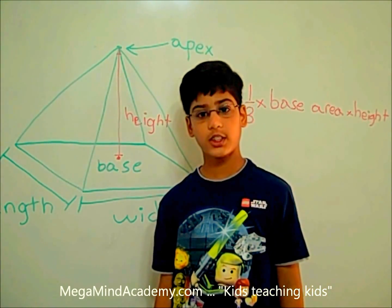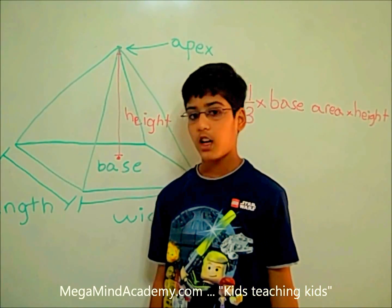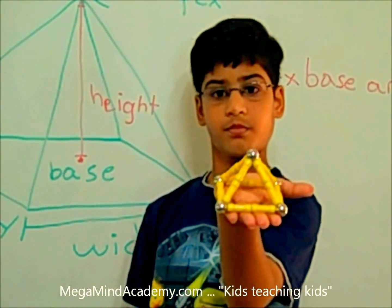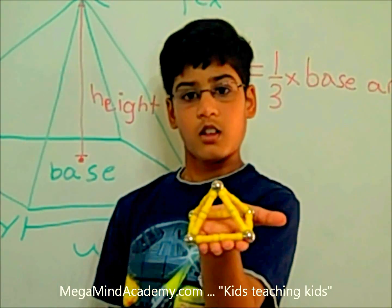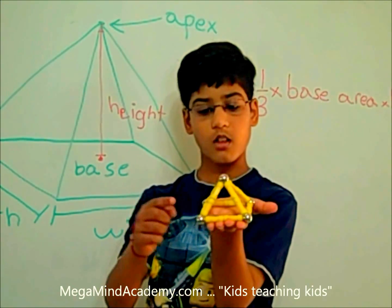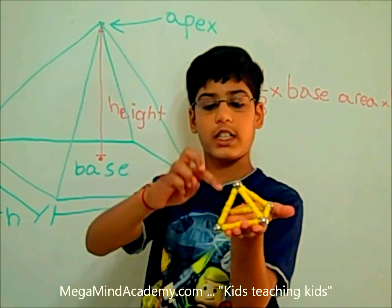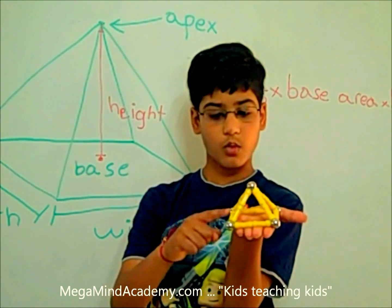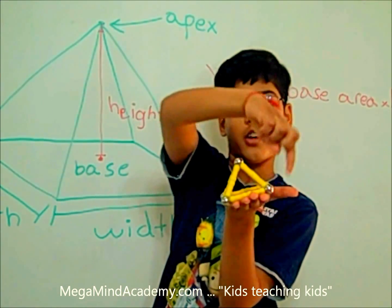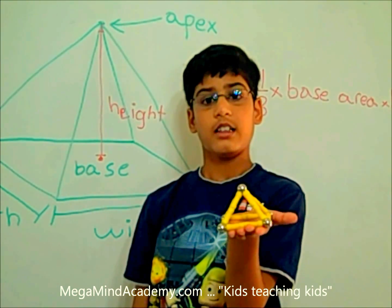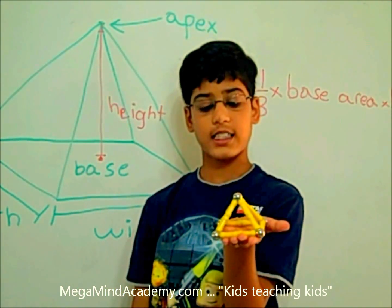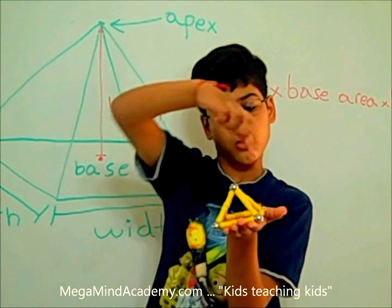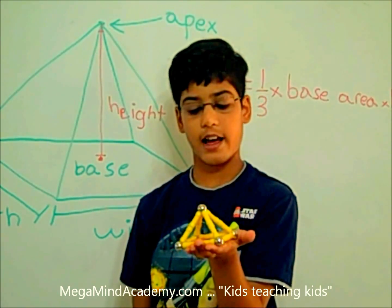Now let's see how many faces, vertices, and edges are on a square pyramid. Let's see how many faces there are: one as the base and one, two, three, four all around the sides — that makes five faces. Now let's see how many vertices: one, two, three, four on the base and one as the apex — that makes five vertices. Now let's see how many edges: one, two, three, four on the base and one, two, three, four around the sides — that makes eight edges.